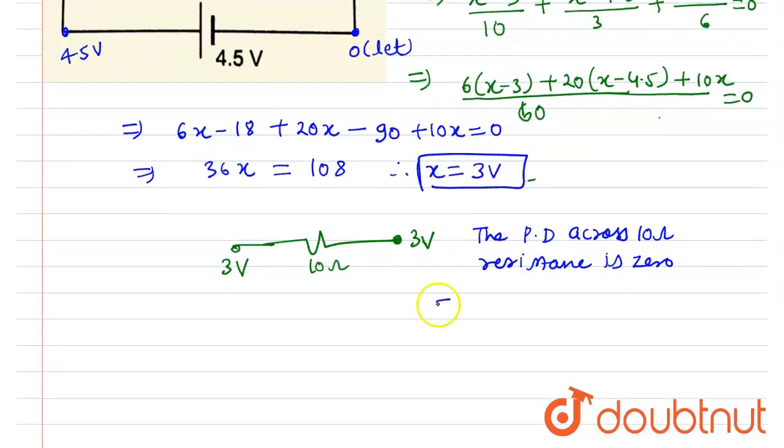Current flowing through this i1 will also be 0, because i1 equals to delta v upon resistance, and as delta v is 0, 0 upon something is also 0. So answer will be 0 ampere. This is the answer of this problem. Thank you.